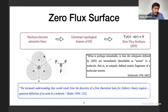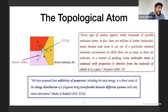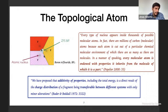Thus Bader intends to offer a solid theoretical basis for Dalton's atomic theory. Quoting the author: 'The increased understanding that could result from the discovery of a firm theoretical basis for Dalton's theory requires a quantum definition of an atom in a molecule.' In the context of QTAIM, the subspaces defined by zero-flux surfaces are known as topological atoms and have two important characteristics: first, transferability, since they can be transferred from one molecular environment to another with minimal changes in the electron density; and second, additivity, since the properties of the whole molecule can be defined in terms of the properties of the atoms that compose it.